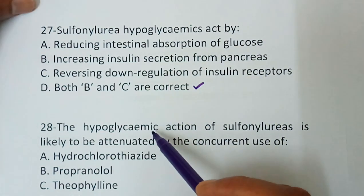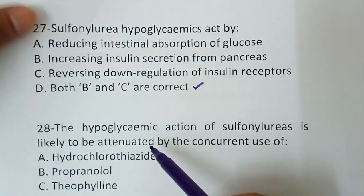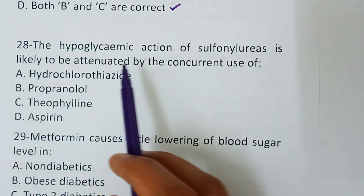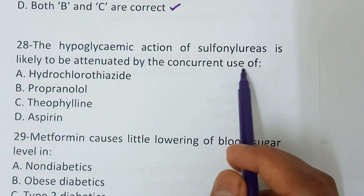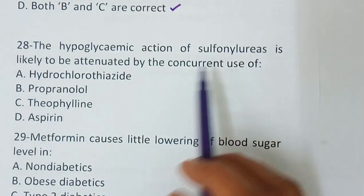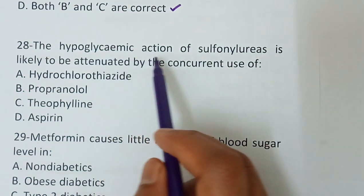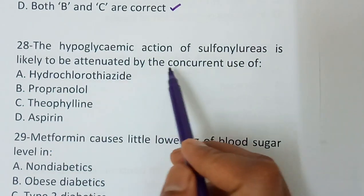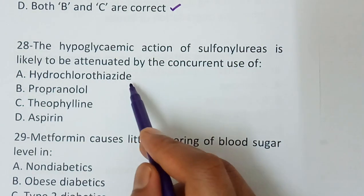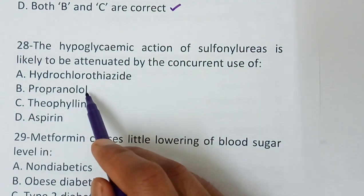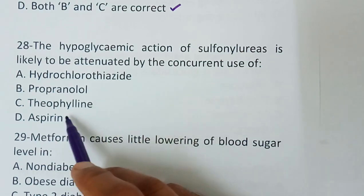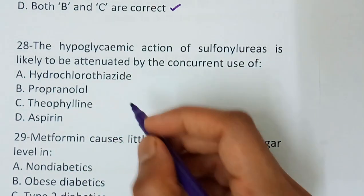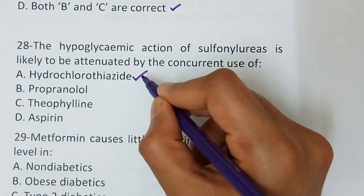Question number 28 — the hypoglycemic action of sulfonylurea is likely to be attenuated by the concurrent use of: option A, hydrochlorothiazide; option B, propranolol; option C, theophylline; option D, aspirin. The correct answer is hydrochlorothiazide.